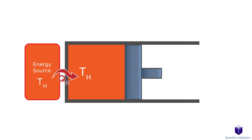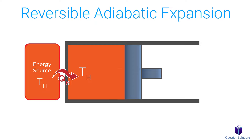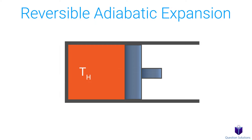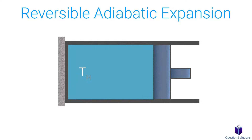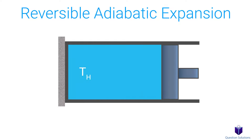The second step is called the reversible adiabatic expansion. At this step, we remove the energy source and replace it with insulation, making the system adiabatic — meaning there is no heat transfer to or from the system to the surroundings. The gas still expands and drops in temperature, reaching a new temperature labeled TL. In this hypothetical cycle, there is no friction between the piston and the cylinder, so the process is reversible.